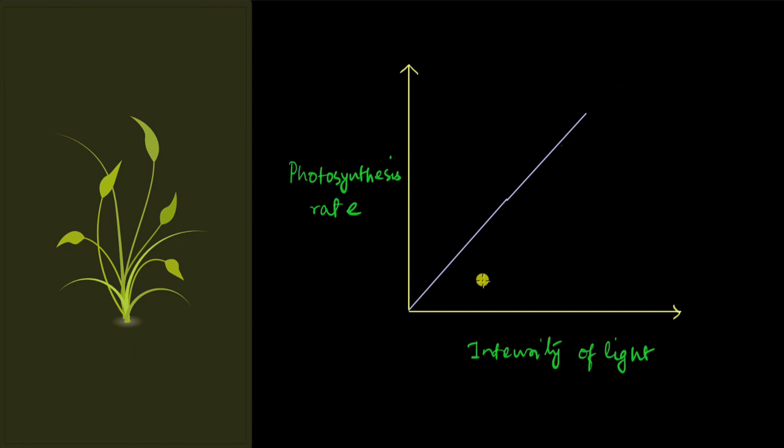Turns out that that is not quite the case. So then what happens really? Well, it's true that initially when there is low intensity of light, the photosynthesis rate varies linearly with the intensity of light. But as there is more and more intensity of light, what happens is the photosynthesis rate stops increasing and then just gets saturated.